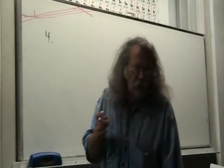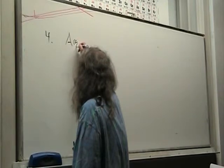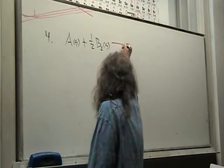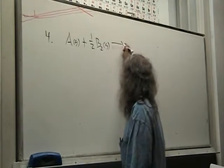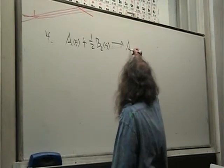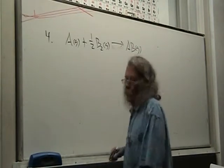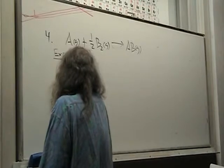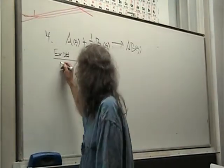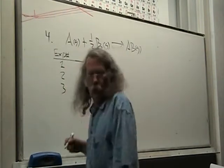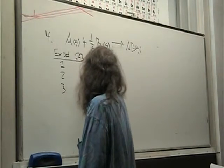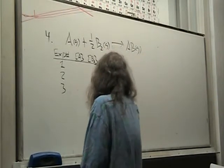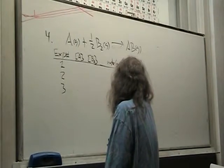And a kinetic investigation of the following reaction. I get the following data. In experiment number 1, 2, and 3, I have the concentration of A, the initial concentration of A, the concentration of B2, and the rate, which is in moles per liter per second.